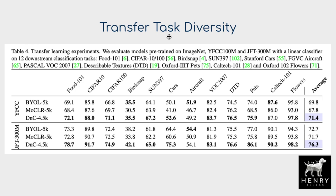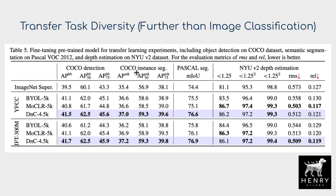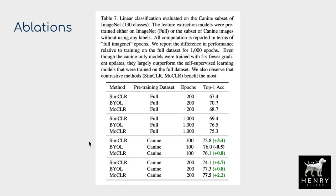To further validate the experiments, transfer tasks are evaluated: pre-training on ImageNet, YFCC 100M, and JFT 300M, then evaluated on Food-101, CIFAR-10, BirdSnap, and other image classification datasets across different visual domains. Similarly, object detection, instance segmentation, and depth estimation tasks further demonstrate the quality of representations learned through this self-supervised algorithm.